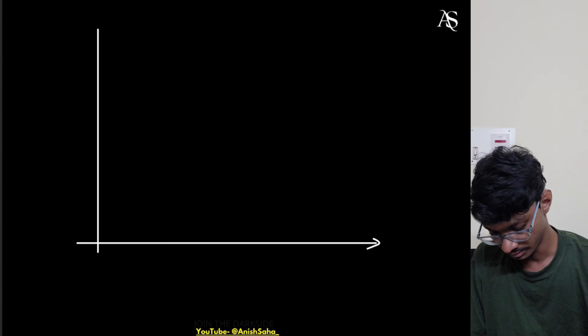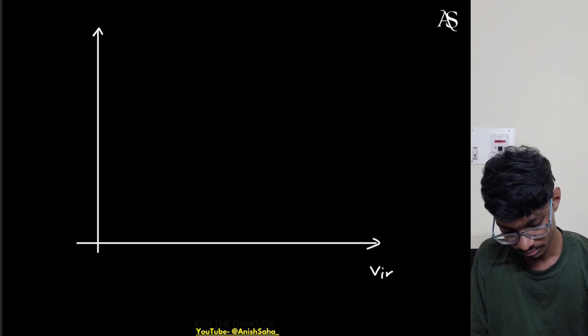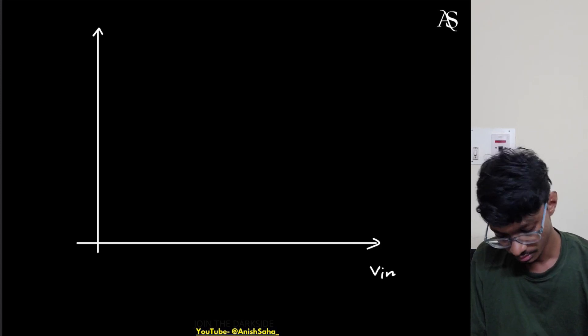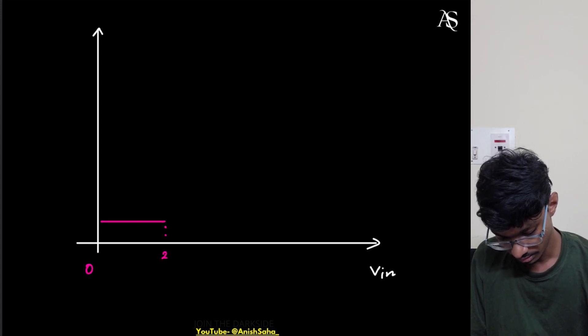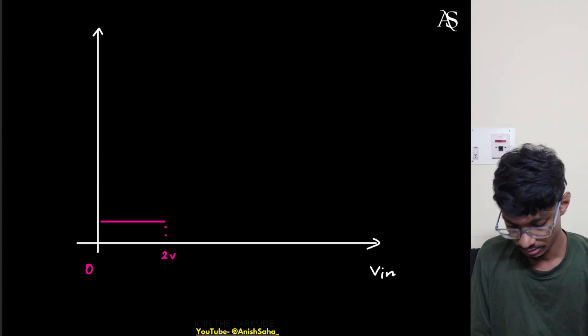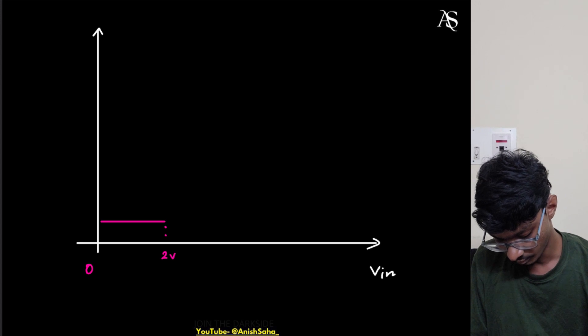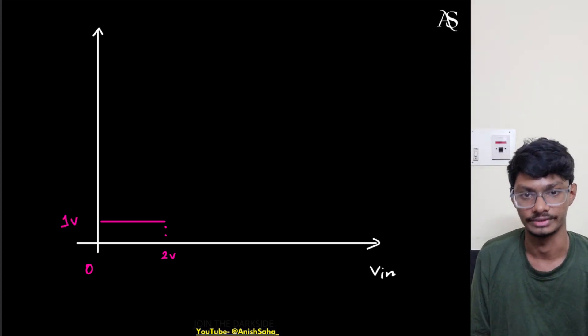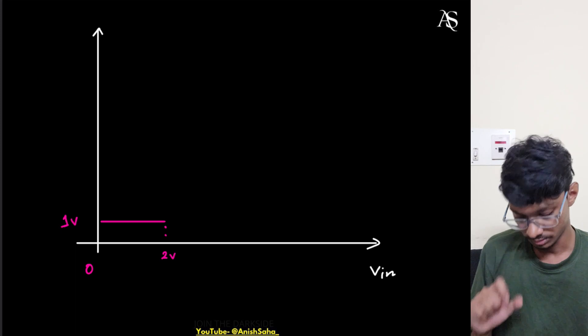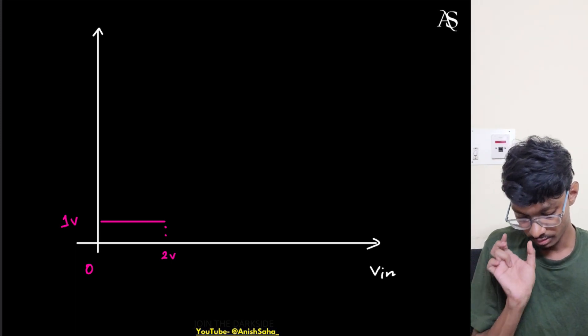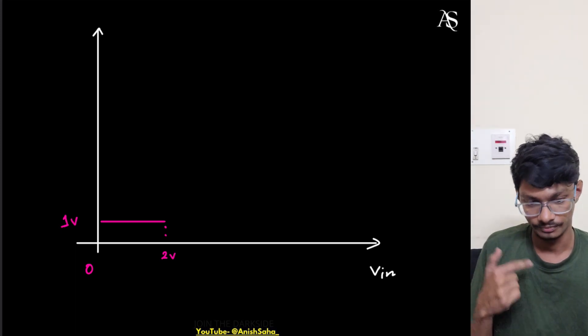So from Vin = 0 to Vin = 2V, the output voltage remains constant at one volt, which is |Vtp|. Let me draw this on the graph: from zero to two volts on the Vin axis, Vout is constant at one volt (|Vthp|).